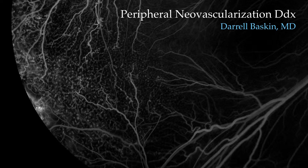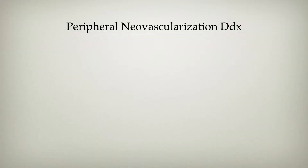Many times when you see neovascularization of the retina, it's typically due to things like proliferative diabetic retinopathy, retinal vein occlusions, branch retinal artery occlusion, and the more common entities. But for test-taking purposes, and for many patients, there are a lot of other diagnostic entities that should be considered.